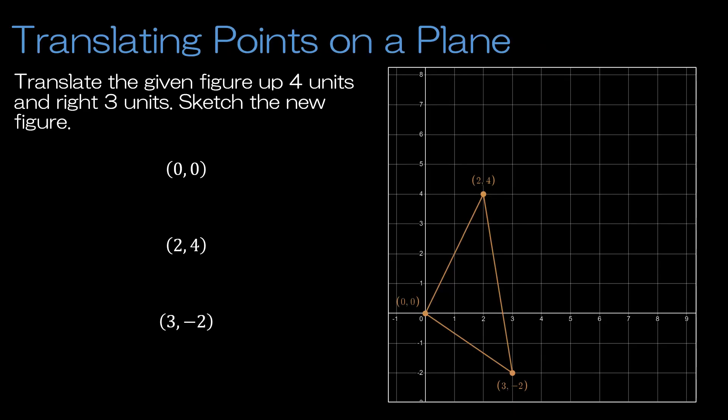One application of being able to plot points is translating points on a plane. So in this case, we're asked to translate the given figure, which is obviously a triangle, up 4 units and to the right 3 units. So there's a couple of ways to think about doing this. Obviously we can just look at the picture. We can say if the point starts at (0, 0),